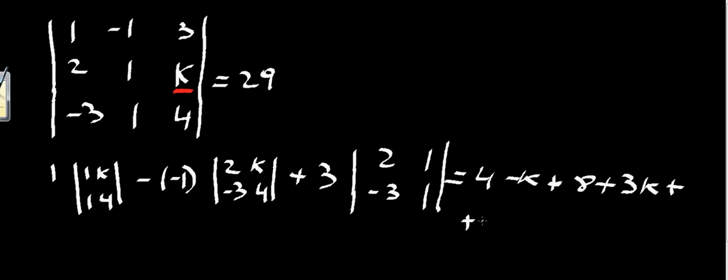plus 3 times—and I'll put this one in a bracket as it's not 1—2 minus minus 3, which is 2 plus 3, and all of this we know from the question equals 29.